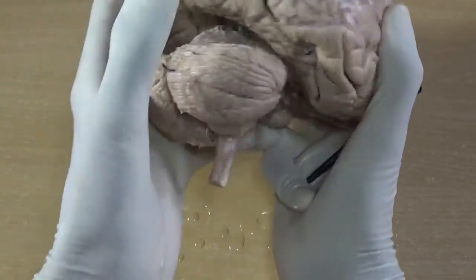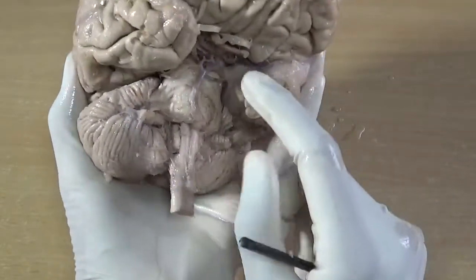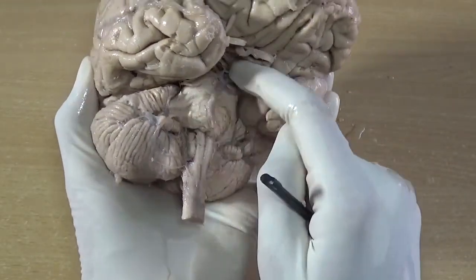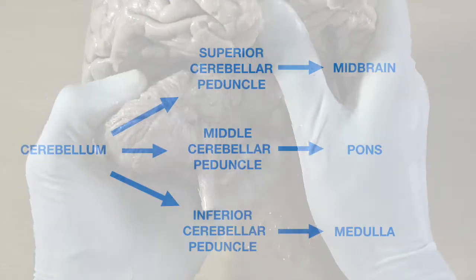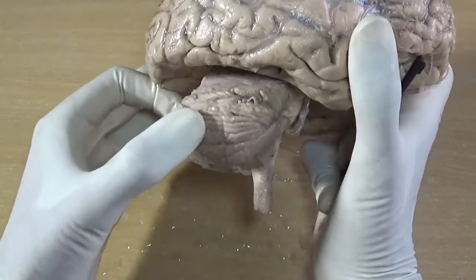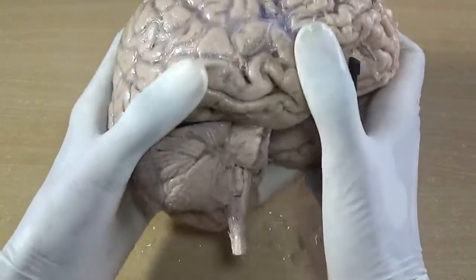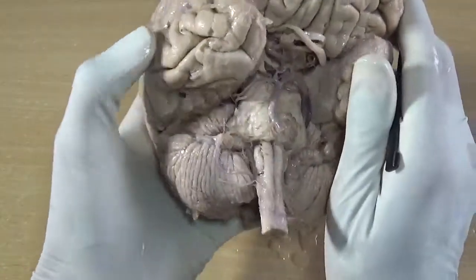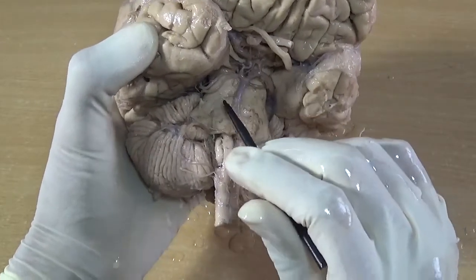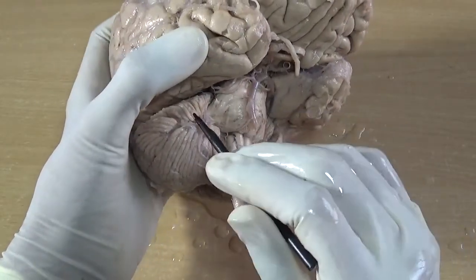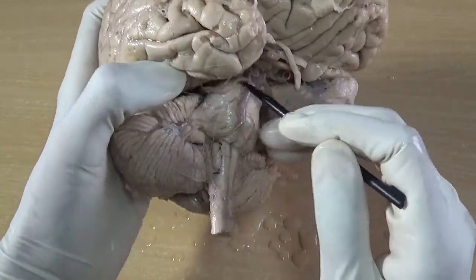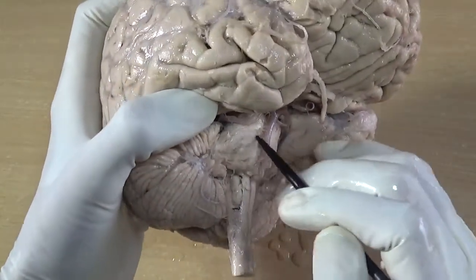The posterior notch lodges the falx cerebelli, one of the extensions of dura mater, whereas within the anterior notch lies the brainstem. There are three cerebellar peduncles by which the cerebellum is connected — these are bundles of white matter.